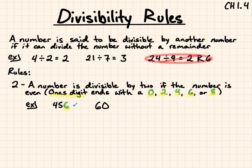How about 60? 60 is divisible because it ends with a 0, so that is divisible. 3049 is not divisible by 2 because it ends in a 9.